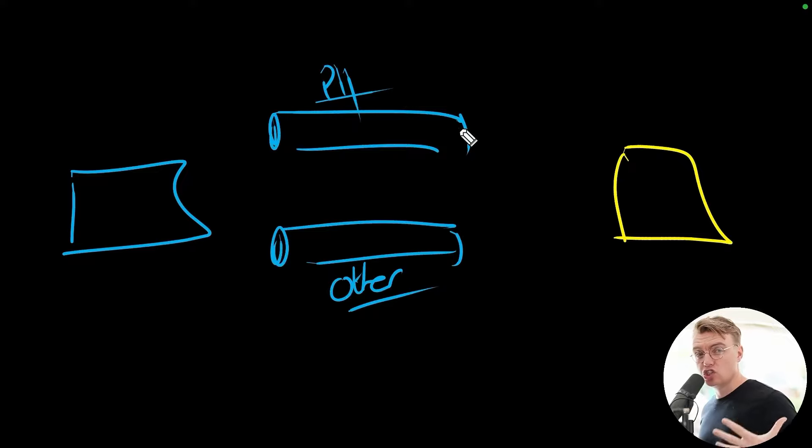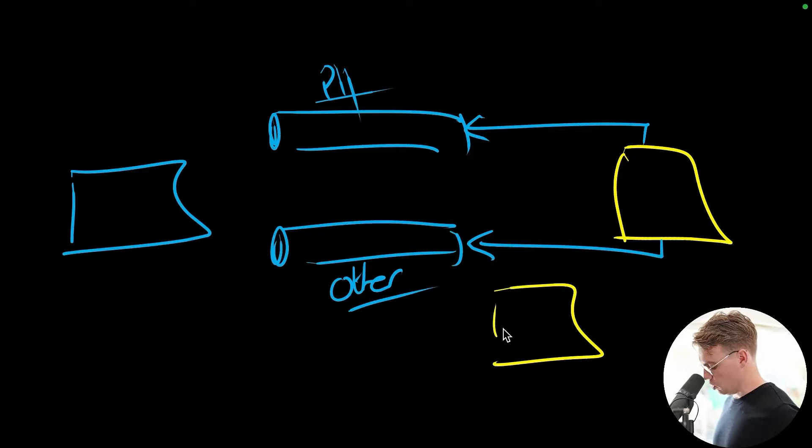You can only allow certain services to have access to be able to create rules, create subscriptions on the specific message channels. So this service here would be allowed to create subscriptions on both channels, whereas this other additional service down here may only have permission to create rules or subscriptions on the generic, the other, the all events message channel.